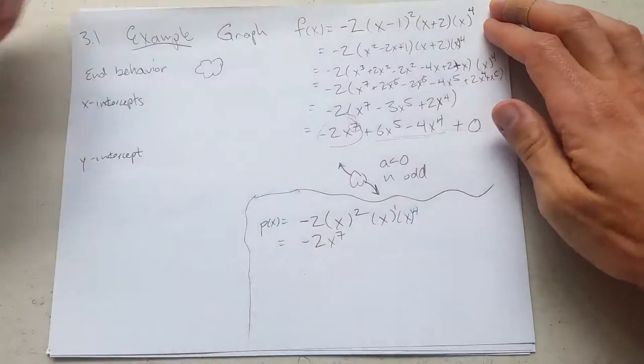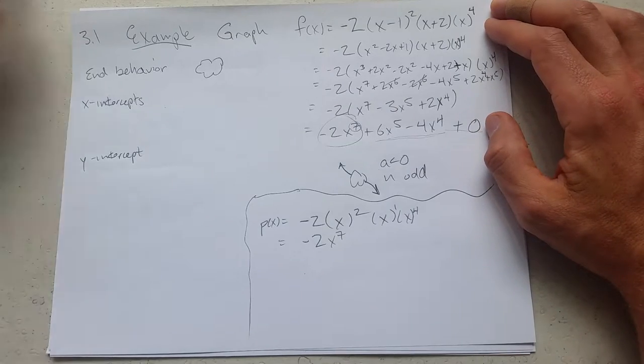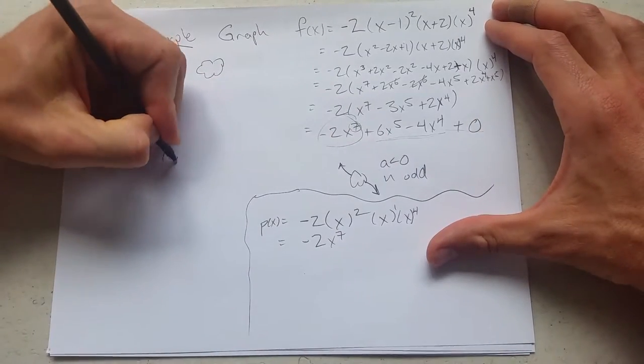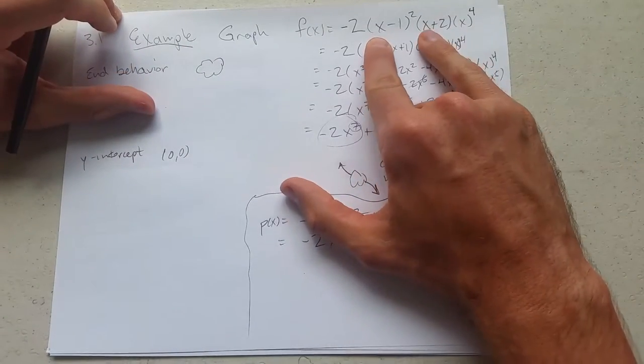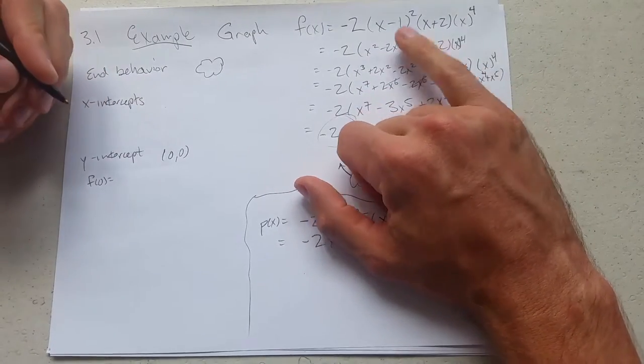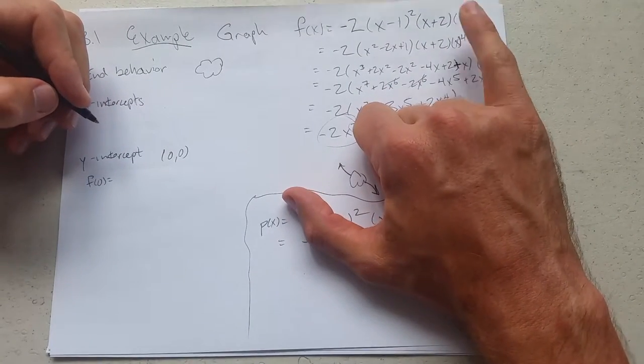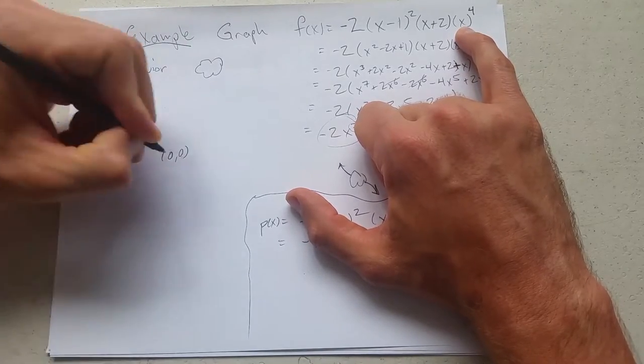And our y-intercept could be useful. So we got our y-intercept. We'll write that down. 0, 0. What's another way to get the y-intercept? Plug in 0 right here. So you can just take 0 and f it. F of 0. You carefully plug it in, which I'm not going to do. But you can see right here you're going to get 0. So you get the 0, 0.